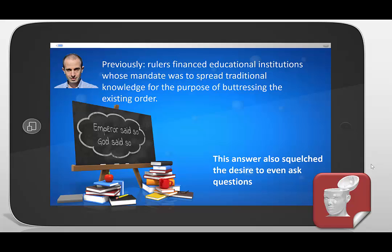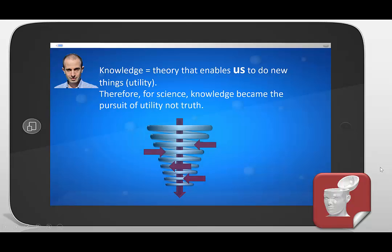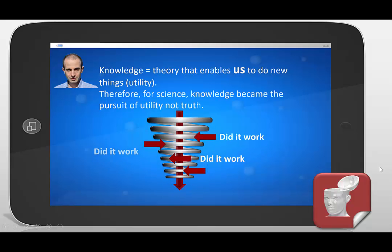That answer itself squelches the desire to even ask questions. If every time you ask somebody a question and they say 'God said so,' it stops the inquiry — like a child who keeps asking 'why' and eventually stops asking. Harari also points out that knowledge equals a theory that enables us to do new things. So our knowledge is about utility and not about truth — this is a very important issue in Harari's position. Therefore, science and knowledge became the pursuit of utility, not truth.